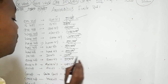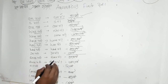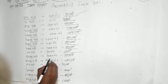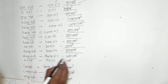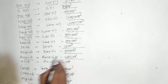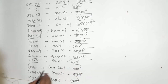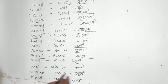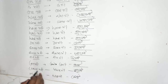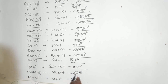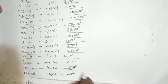Do-verb contractions: 'do not' becomes 'don't,' 'does not' becomes 'doesn't,' 'dare not' becomes 'daren't,' 'did not' becomes 'didn't,' 'cannot' becomes 'can't,' 'could not' becomes 'couldn't,' 'may not' becomes 'mayn't.'